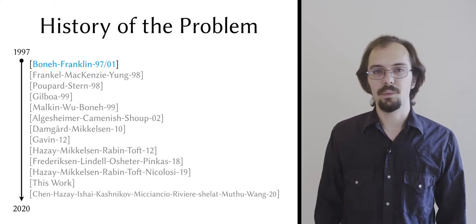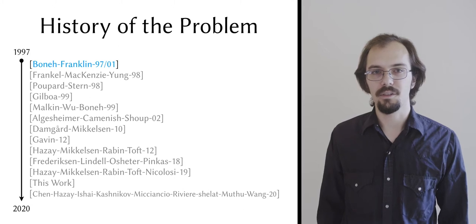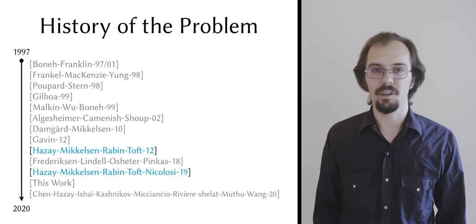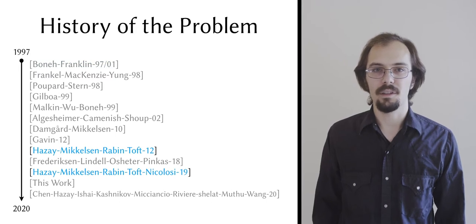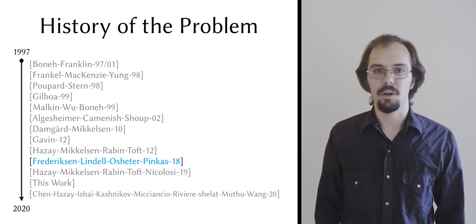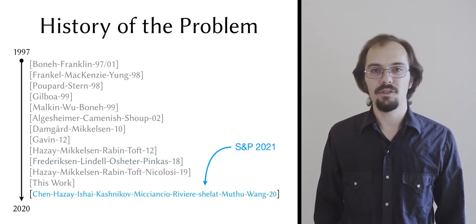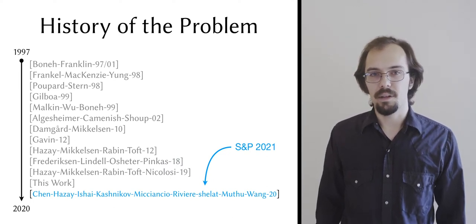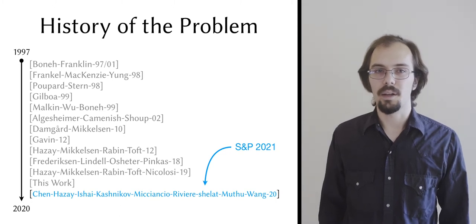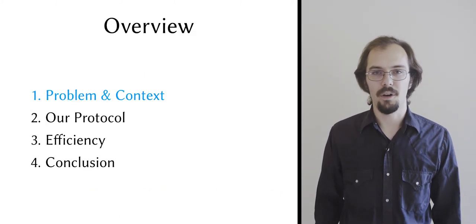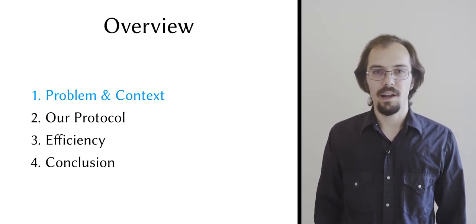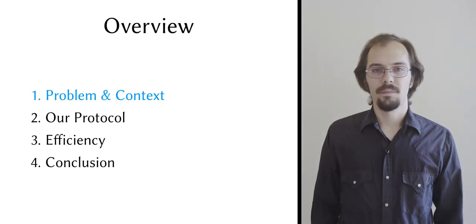I'm going to skip most of the history which focused on semi-honest or honest-majority constructions and talk only about the most recent works, which are those of Hazay, Mikkelsen, Rabin, Toft, and Nicolosi, and Frederickson, Lindell, Osheter, and Pincus. I'd also like to point out that there is already a follow-up to our work, which uses some of the techniques we introduced and achieves a really astonishing performance in the aggregator model. That paper is on ePrint now, and it will appear at S&P in 2021. After I talk about these prior works and the general shape of the problem, I'll introduce our protocol itself, and after that I'll show you why it's efficient.